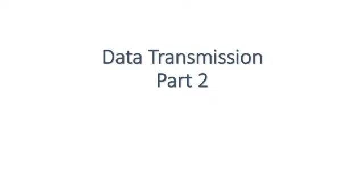In this lecture, we will study the signal impairments that affect data and data transmission. We will begin by reviewing the difference between analog and digital signals, then we will look at how data is implemented. Finally, we will look at some real-world examples.